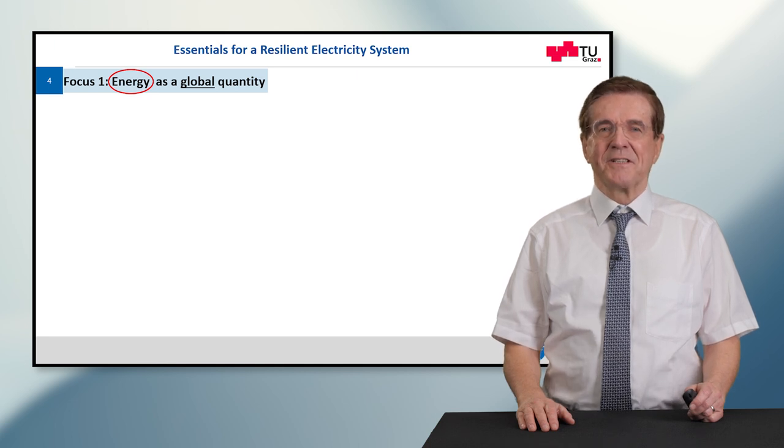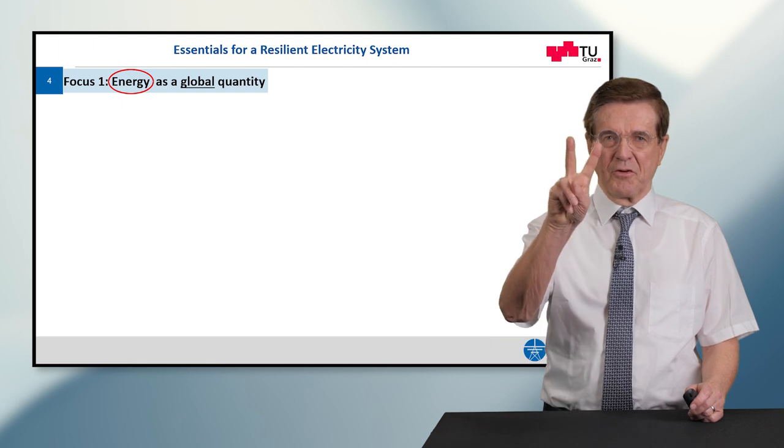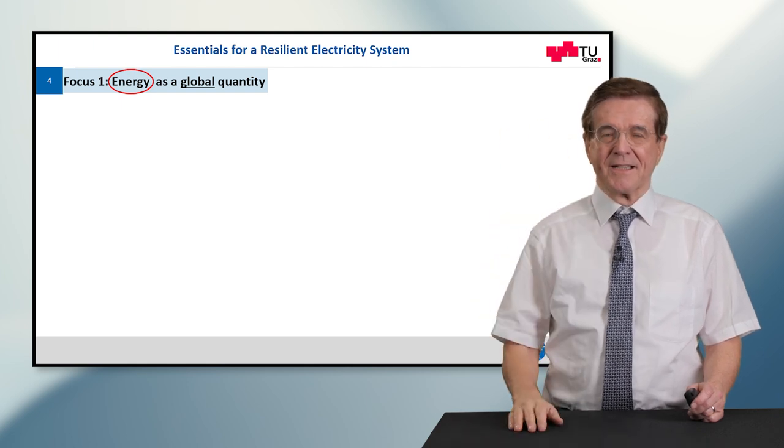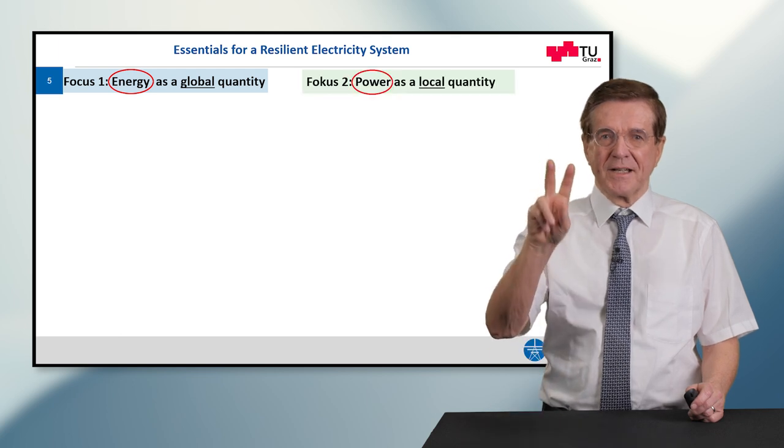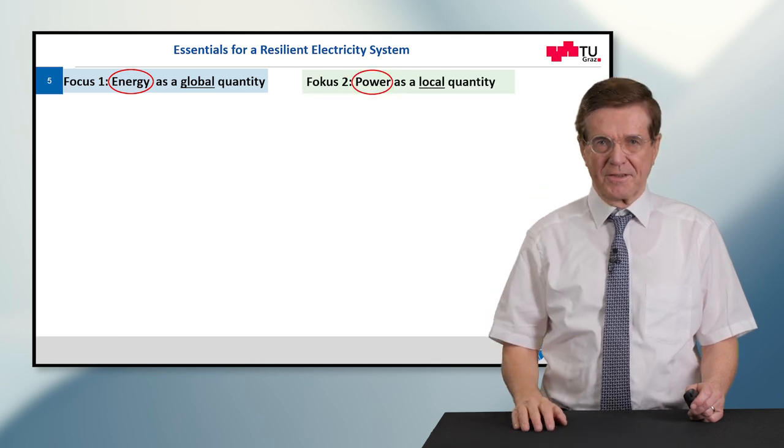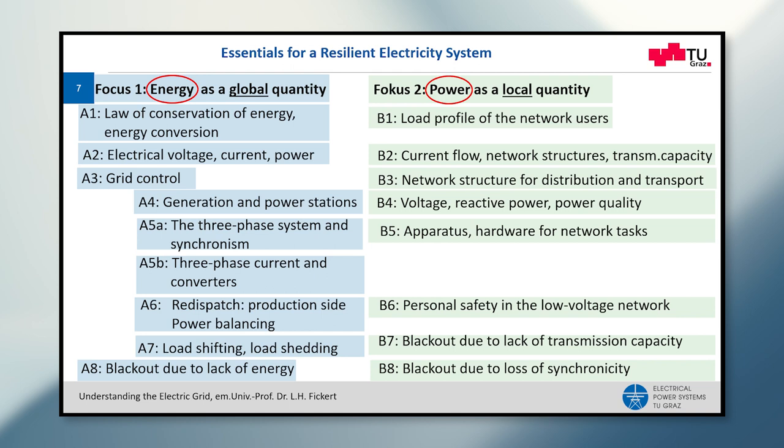So the essentials for resilient electricity systems can be traced back to two focuses. Focus one is energy as a global quantity, and focus number two is the power as local quantity. And for the sake of completeness I show you the full content of my course. Today we concentrate on electrical voltage, current, and power.